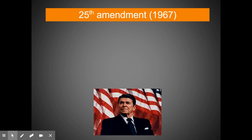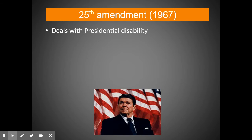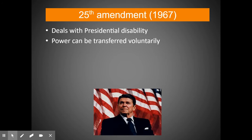Another amendment related to this topic is the 25th Amendment, passed in 1967, which deals with presidential disability. The presidential succession list is straightforward when a president dies in office, but what happens if the president doesn't die but suffers from some disability that prevents them from exercising the powers of the office? That's what the 25th Amendment addresses. One thing it specifies is that power can be transferred voluntarily, as long as the president writes a note to Congress.